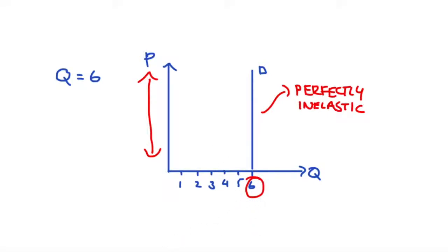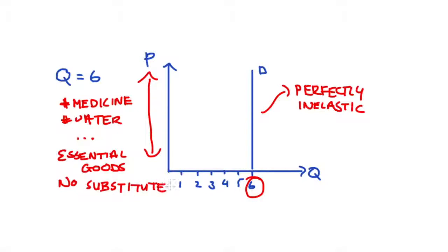Some examples of goods that could be very or even maybe perfectly inelastic might be life-saving medicine or water. Generally, they are essential goods with no substitutes, and as a result of this, people's demand is unresponsive to changes in price.